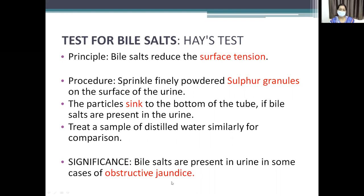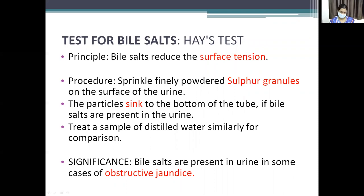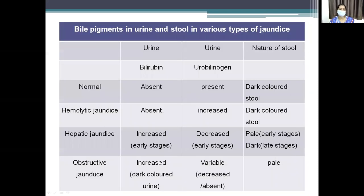Bile salts are seen in cases of obstructive jaundice. The significance of ketone bodies is that they are a product of abnormal metabolism and may be a sign of impending diabetic ketoacidosis or coma.